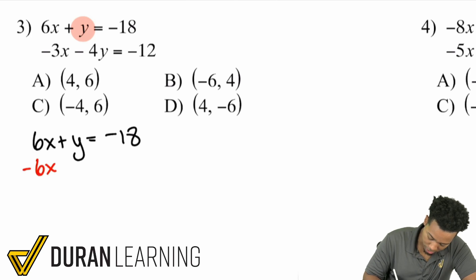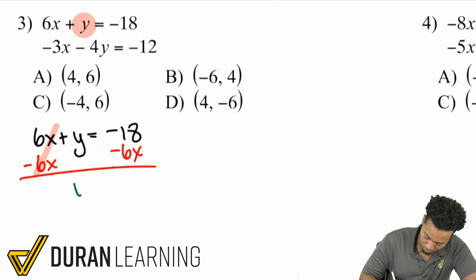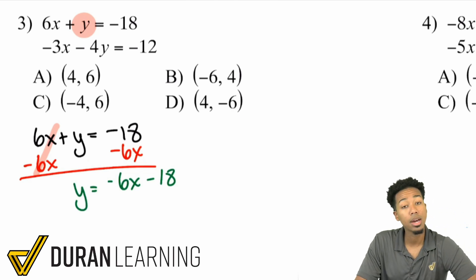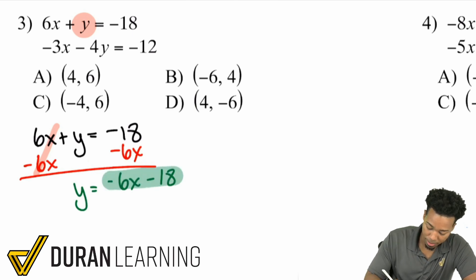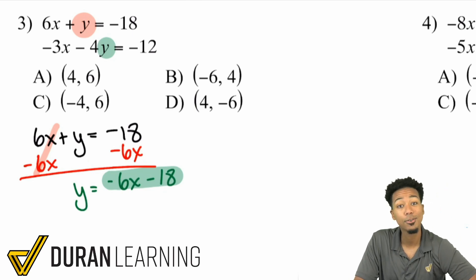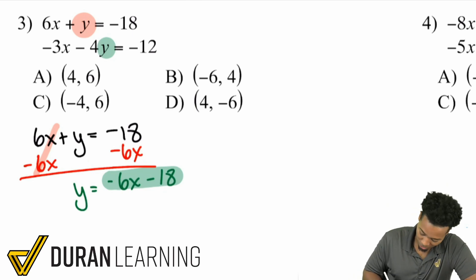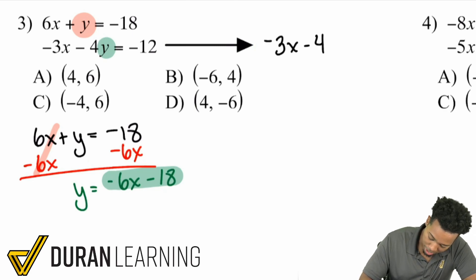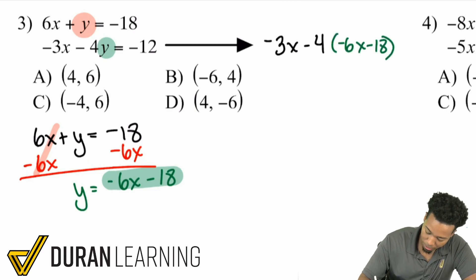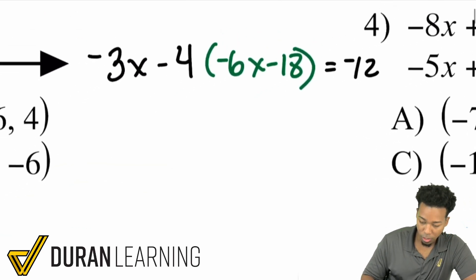I'll subtract 6X from both sides of the first equation. That gives me Y equals negative 6X minus 18. Now I'll substitute this into the other equation: the Y in negative 3X minus 4Y equals negative 12 is equal to negative 6X minus 18.